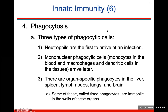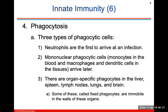There are three types of phagocytic cells. Neutrophils are always the first to arrive at an infection. Phagocytosis is the idea of engulfing something foreign and then tearing it apart. Mononuclear phagocytic cells are monocytes in the blood and macrophages and dendritic cells in the tissues — they will arrive later. There are also organ-specific phagocytes in the liver, spleen, lymph nodes, lungs, and brain. Some of these are fixed phagocytes and all others are movable.